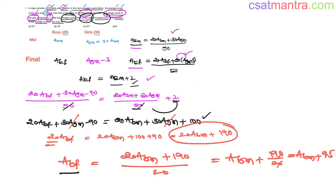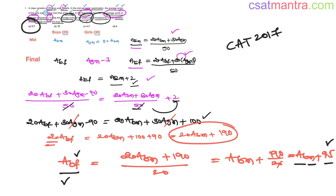ABF is the average score of boys in the final examination, equal to the average score of boys in the mid-semester examination plus 9.5. So the average score of boys increased by 9.5 in the final examination. Our answer is A. This question was asked in CAT 2017 — not at all difficult, just a bit lengthy, 2 to 3 extra steps.